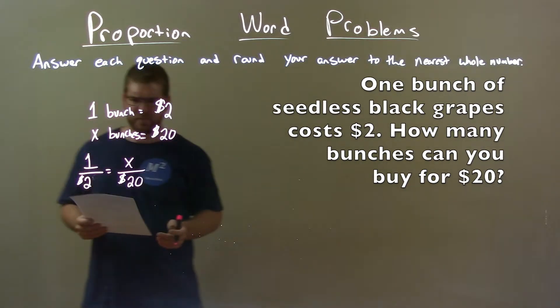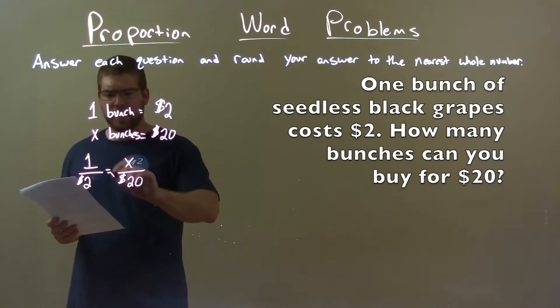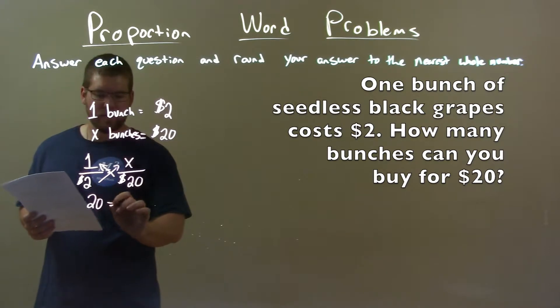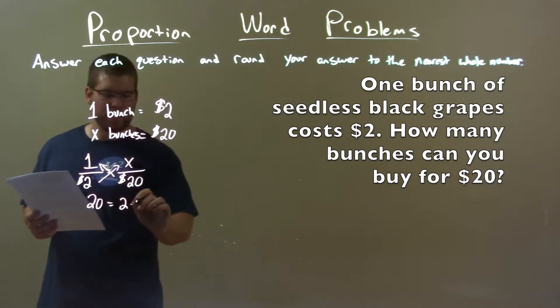And so we cross multiply here, this proportion. And 1 times 20 is just 20. So we have $20 equals $2 times x.